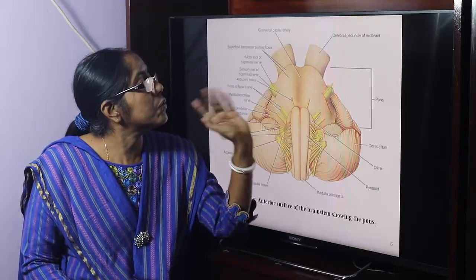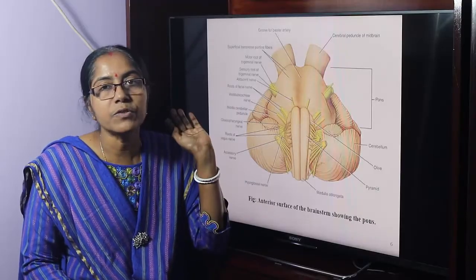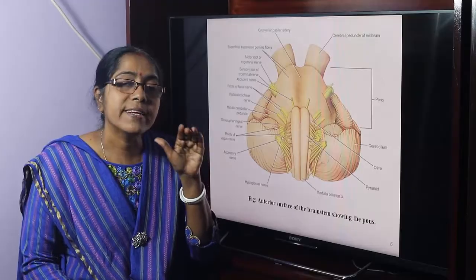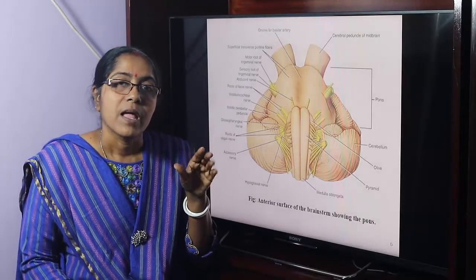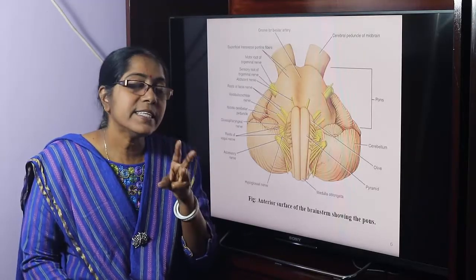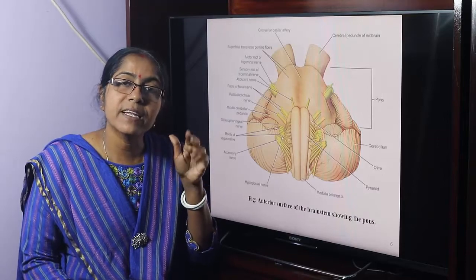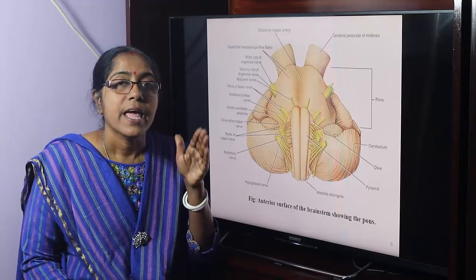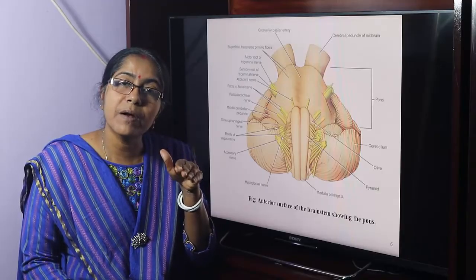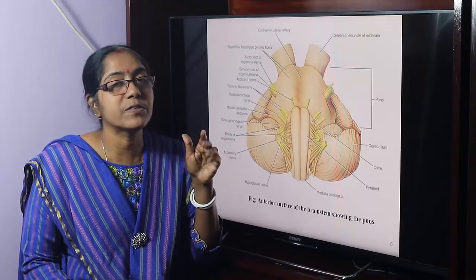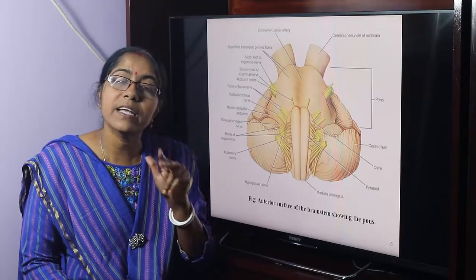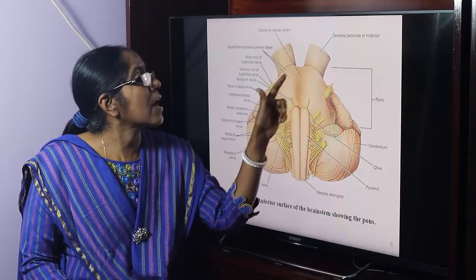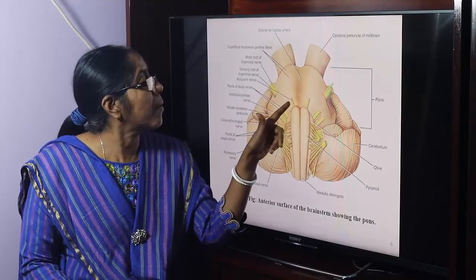There is a motor root and a sensory root. The trigeminal nerve is a mixed nerve. The three divisions are: ophthalmic, maxillary, and mandibular. Ophthalmic and maxillary divisions are purely sensory. The mandibular division has both sensory and motor roots.